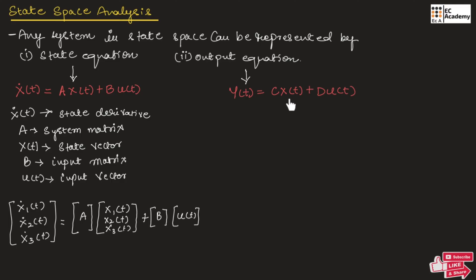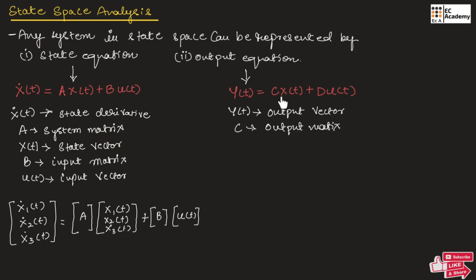This is the general representation of the output equation. Here, y(t) is the output vector. C represents the output matrix — this output matrix represents the relation between the state vector and the output vector. x(t) is the state vector. D is the transition matrix, which describes the relation between the input vector and the output vector. And u(t) is the input vector.